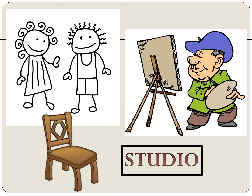Let's pretend you have a father who is a famous artist. He wants to paint your portrait so you pose for him in his studio — a studio is a place where an artist paints. He is going to paint you twice. In the first portrait you will be sitting in a chair wearing a clown costume.